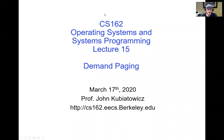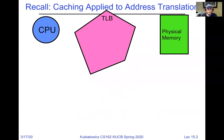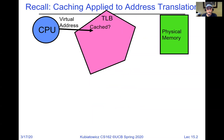Picking up where we left off from last time, we're going to move on from TLBs into demand paging. We talked about caching when applied to actual address translation. A virtual address comes out of the CPU, and the TLB is a type of cache. That cache says: do I know about that virtual address? If yes, we very quickly get a physical address to go to physical memory with and get the data.